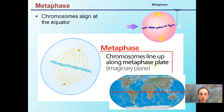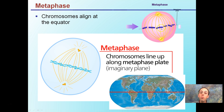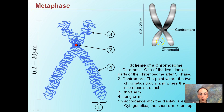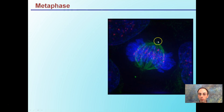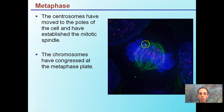In metaphase, chromosomes line up along the metaphase plate — on the equator, which is an imaginary plane in the cell, just like the equator on a globe. There's no true plate; they simply form this line in the middle. Spindle fibers attach to the centromere, shown as the red region, where the two sister chromatids join. This attachment point allows the two to be separated to form two identical cells.